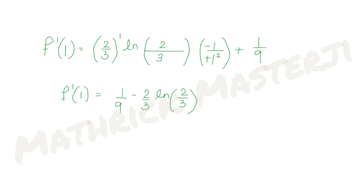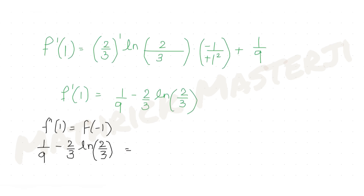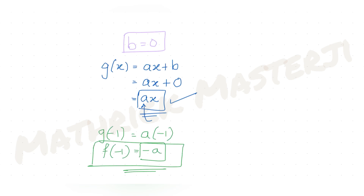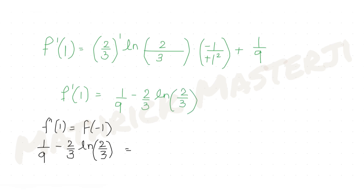Using f'(1) = f(-1): we have 1/9 - (2/3) ln(2/3) = -a. Multiplying throughout by -1 gives a = (2/3) ln(2/3) - 1/9.